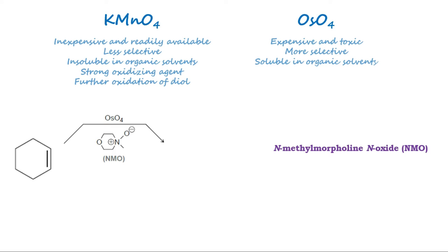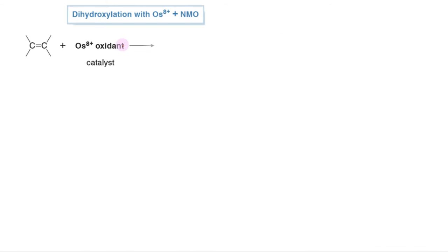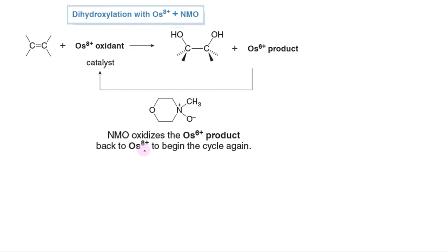Typical cooxidants include N-methylmorpholine N-oxide, NMO, and tertiary butyl hydroperoxide. In the catalytic process, dihydroxylation of the double bond converts the OsO8+ oxidant into an OsO6+ product, which is then reoxidized by NMO to OsO8+. This OsO8+ reagent can then be reused for dihydroxylation, and the catalytic cycle continues. This has been termed Upjohn dihydroxylation.